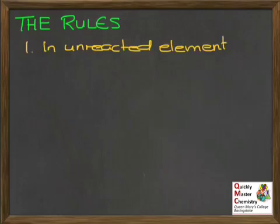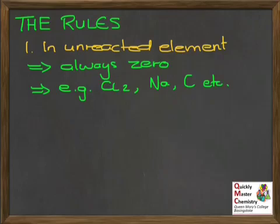The first rule relates to unreacted elements, and the rule here is that the oxidation state will always be zero. By unreacted element, we mean when the element is not part of a compound, so things like chlorine Cl2, sodium the metal on its own Na, carbon maybe as diamond or graphite, just carbon atoms. Oxidation state is always zero for an element when it's just the element, not part of a compound.